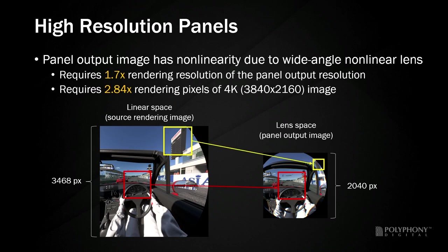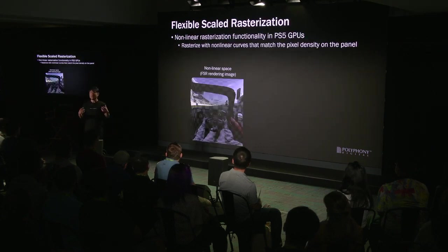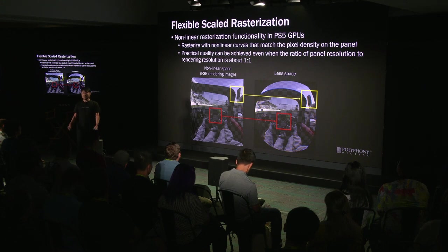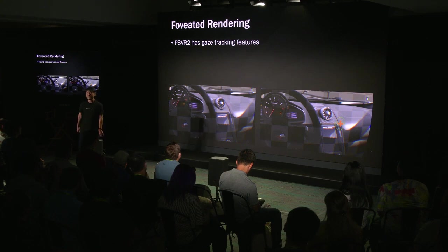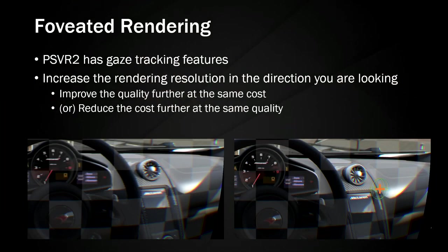Due to the nonlinearity of lens space, the edge of the source rendered image can have a lower resolution — it would be nice if we could rasterize nonlinearly. PSVR 2 can do this. PlayStation 5's GPU has a hardware feature called Flexible Scaled Rasterization, which performs nonlinear rasterization based on nonlinear curves set on the screen. This allows practical quality to be achieved even when the ratio of panel resolution to rendering resolution is about 1:1, significantly lowering rendering cost. In addition, foveated rendering can be performed: PSVR 2 has gaze tracking, which can selectively increase the rendering resolution in the user's line of sight to further improve quality while maintaining rendering cost.